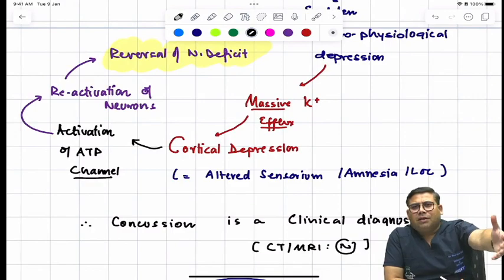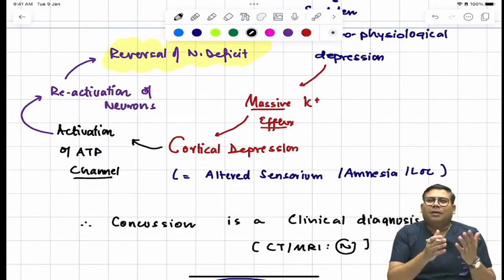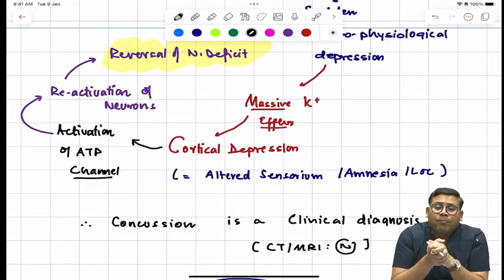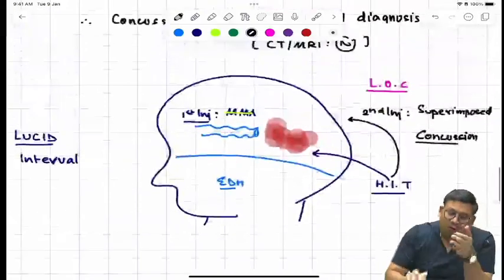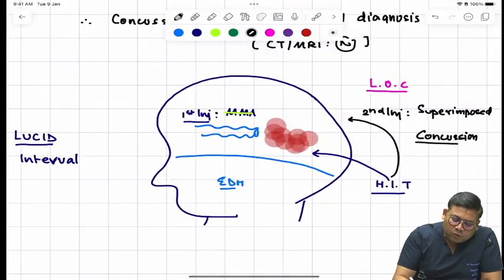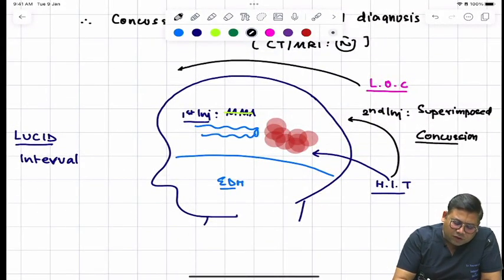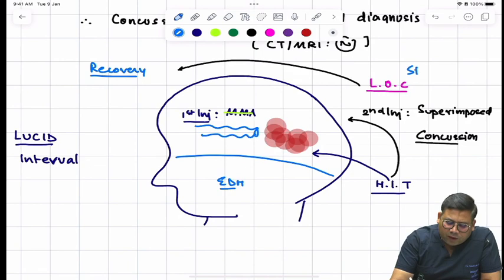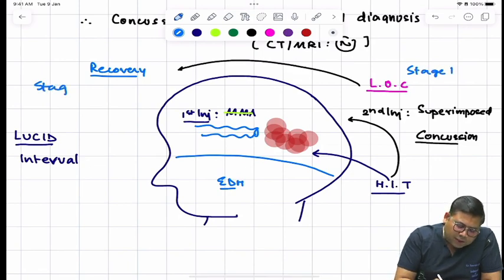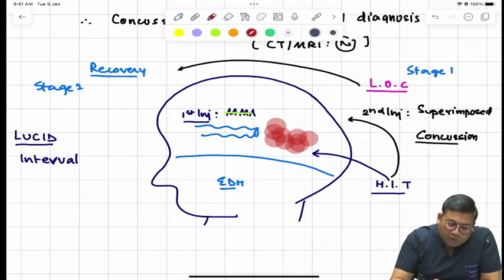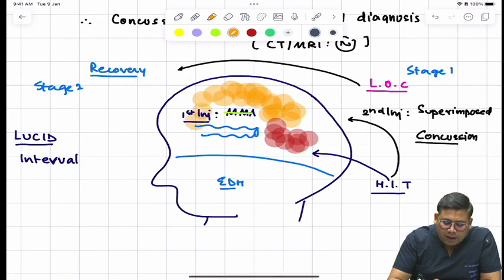Now because of this, ATP channels are activated, massive energy is inflown into the system, and the brain reactivates the depressed part. So by rule, the loss of consciousness which is due to concussion will have a phase of recovery. So there is recovery. Stage one is loss of consciousness, stage two now is recovery. Meanwhile, on the other side, this hematoma is expanding, expanding, expanding.